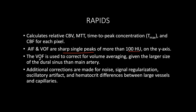RAPID automatically applies corrections for noise, signal regularization, oscillatory artifact, and hematocrit differences between large vessels and capillaries. If any manual changes need to be made, they are best made on the venous outflow side, because the dural sinuses are larger and easier to adjust than the main arteries.